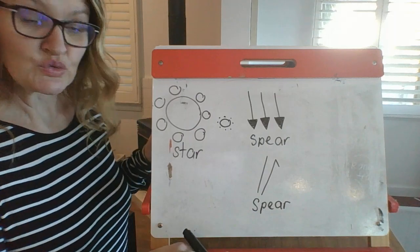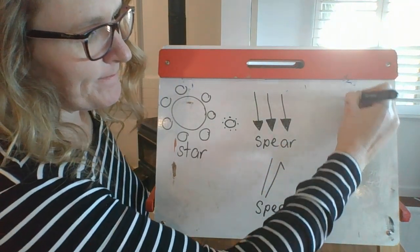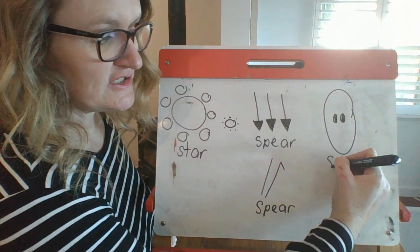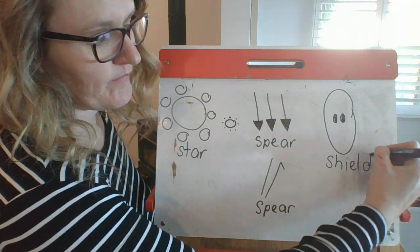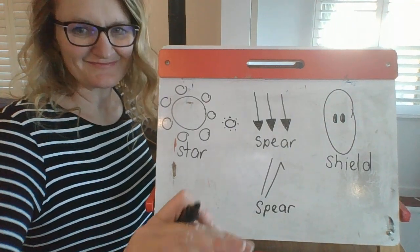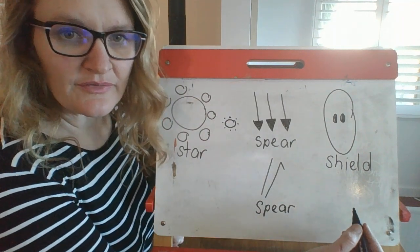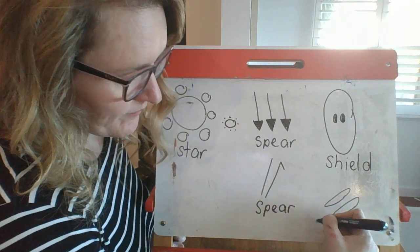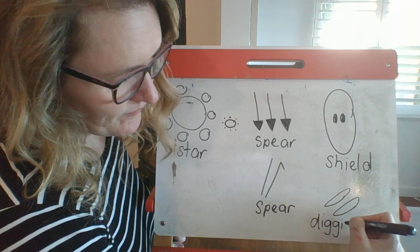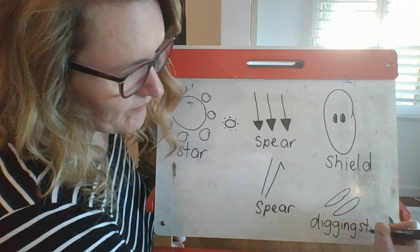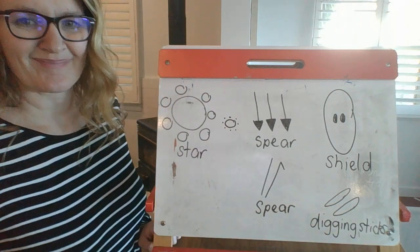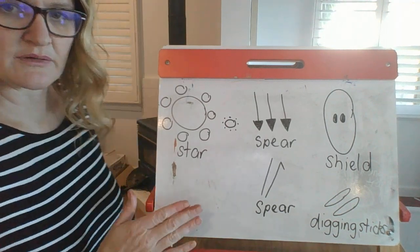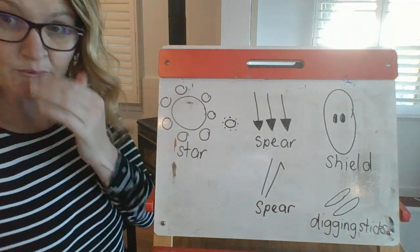I'm doing a few tools at the moment. This is the symbol for a shield, and digging sticks. Make sure you're pausing the video so you can catch up. I'm going to put one more over here — the symbol for an emu.